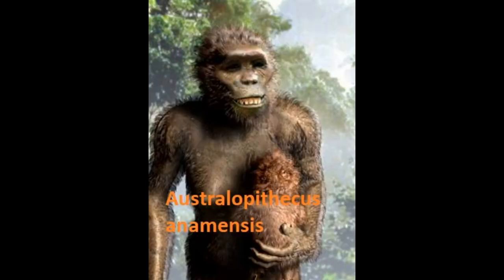The next creature I want to touch upon is Australopithecus anamensis. It was a greater ape that lived about 3.9 million years ago, and even though we're not 100% sure it was the first bipedal, we're pretty sure it was, as it has the most evidence for being the first fully bipedal animal in our lineage. But at this point, as you might notice by looking at the picture, saying 'animal' is getting less and less accurate, because you could even make the argument: is this a human, or is this just like any other ape?